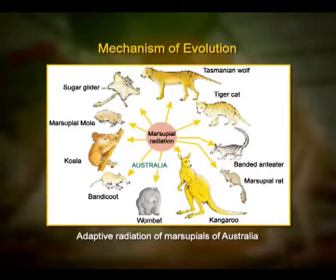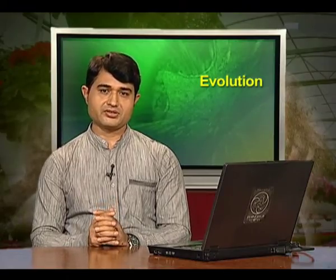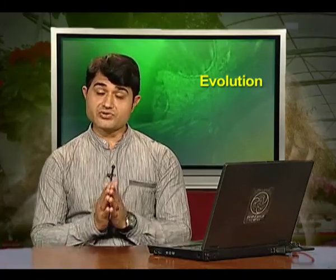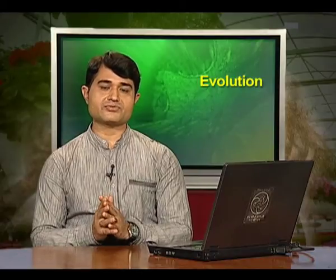Another example is Australian marsupials. A number of marsupials, each different from the other, evolved from an ancestral stock within the Australian island continent. When more than one adaptive radiation appeared to have occurred in an isolated geographical area representing different habitats, one can call this convergent evolution. Placental mammals in Australia also exhibit adaptive radiation, evolving into varieties of placental mammals, each of which appears similar to a corresponding marsupial — for example, the placental wolf and the Tasmanian wolf, which is a marsupial.